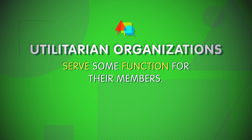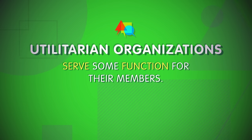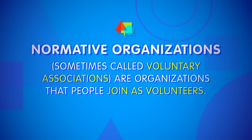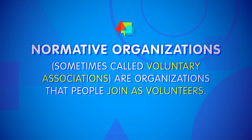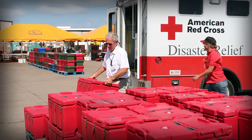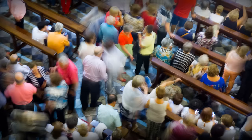You can understand these kinds of groups a bit better by thinking about the three main types of formal organizations. Utilitarian organizations serve some function for their members — businesses pay their employees, and schools teach their students and also pay their teachers. Normative organizations, sometimes called voluntary associations, are organizations that people join as volunteers. They're called normative because people join them to pursue some goal that they think is morally worthwhile. This includes charities like the Red Cross, but also political parties and religious organizations.